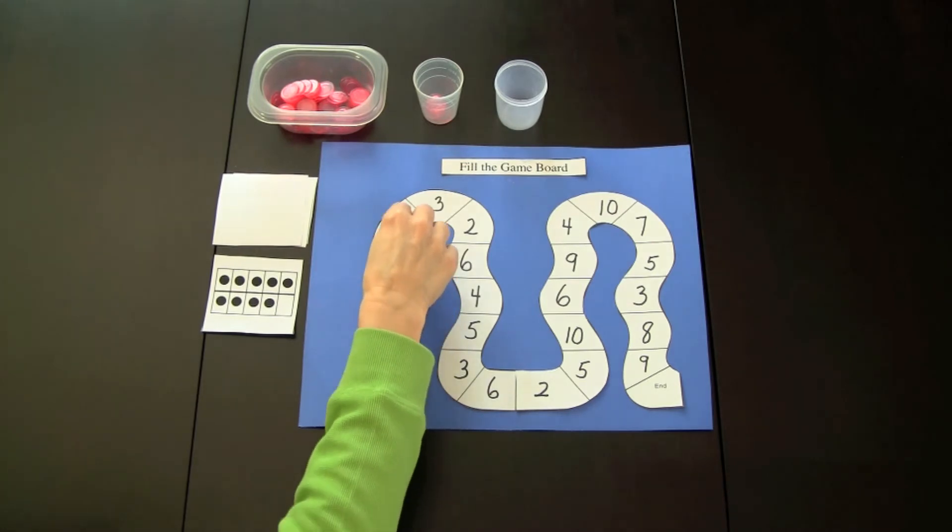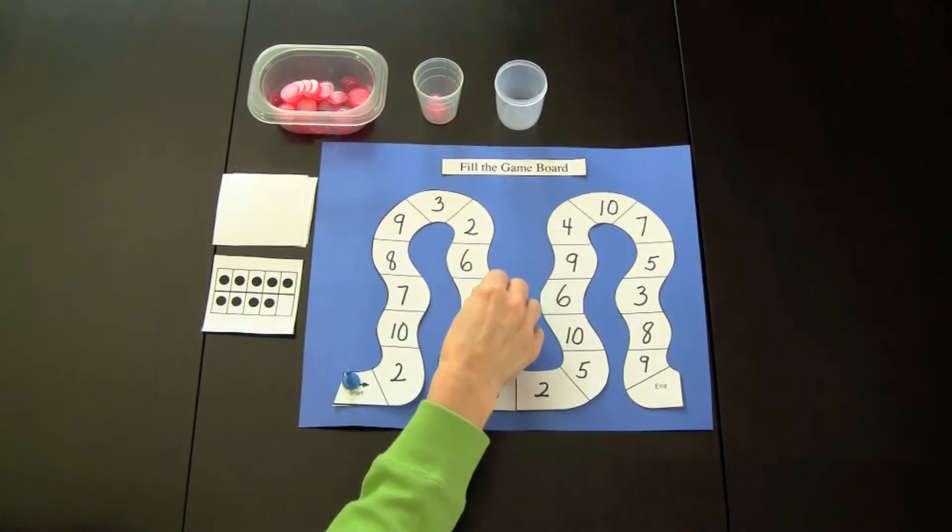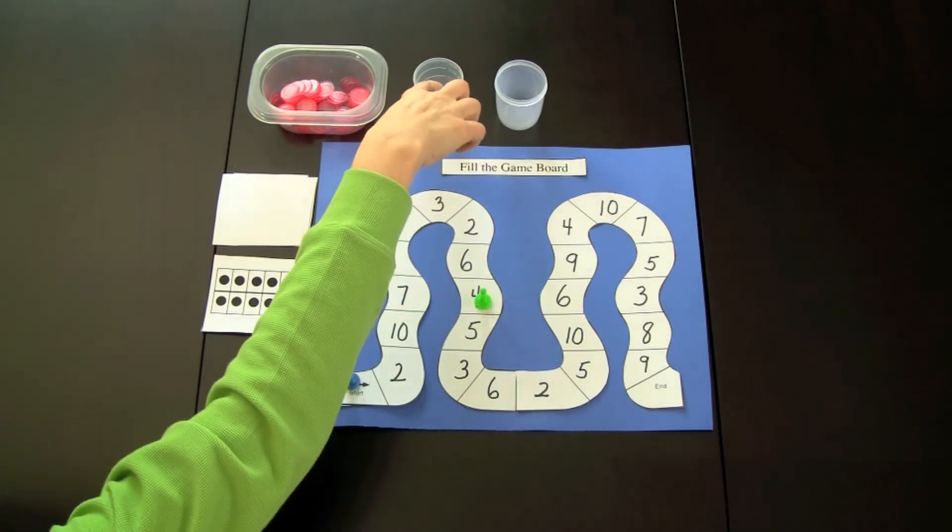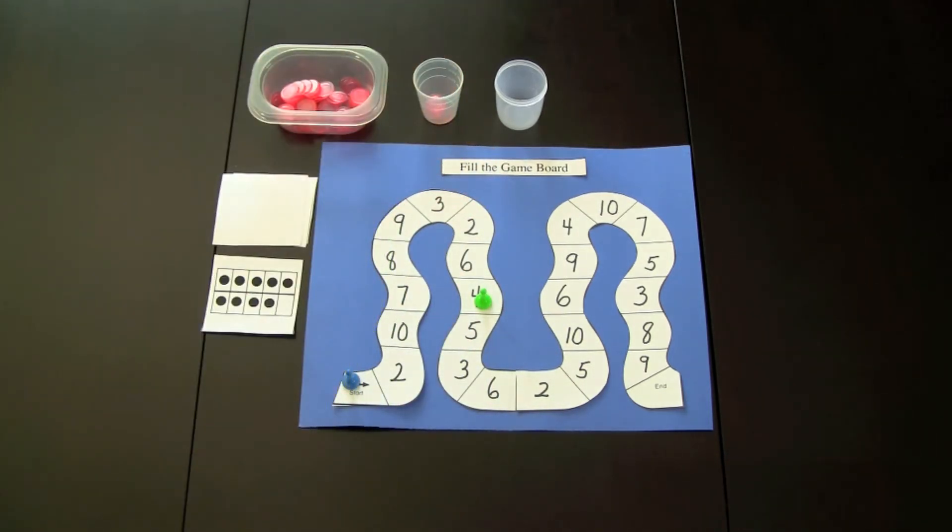They count 1, 2, 3, 4, 5, 6, 7, 8, 9. They must identify the number 4 and place that many bingo chips in the cup. The first person to have their cup filled with bingo chips would be the winner.